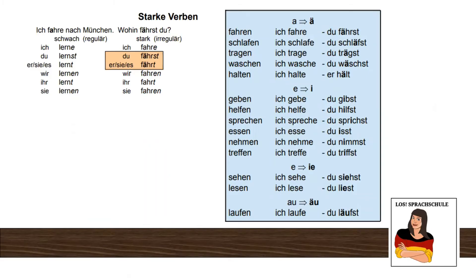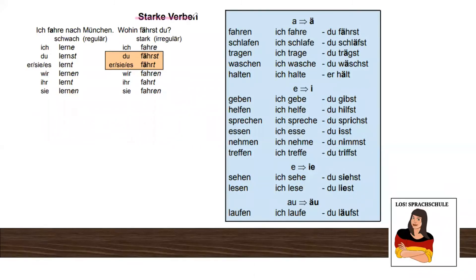The topic today is verbs — and not any kind of verbs, but verbs that are a big stress factor for German learners. Those are called starke Verben — strong verbs. What does it mean? You can visualize it like this: they are so strong they don't accept the common rules of verbs. They change because they want to, and they can, because they're strong.